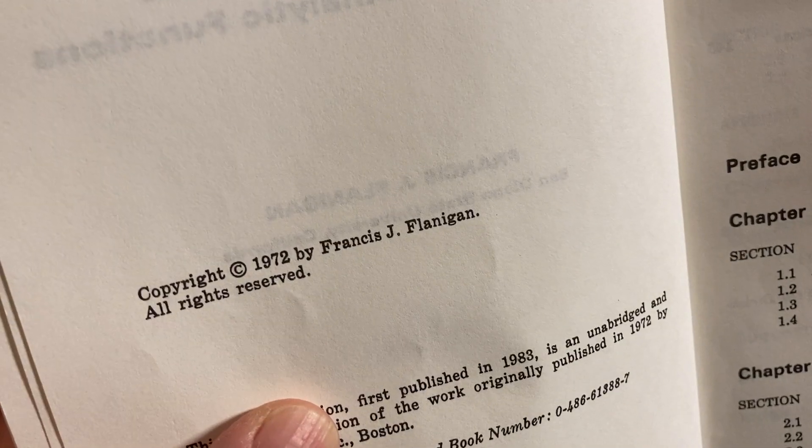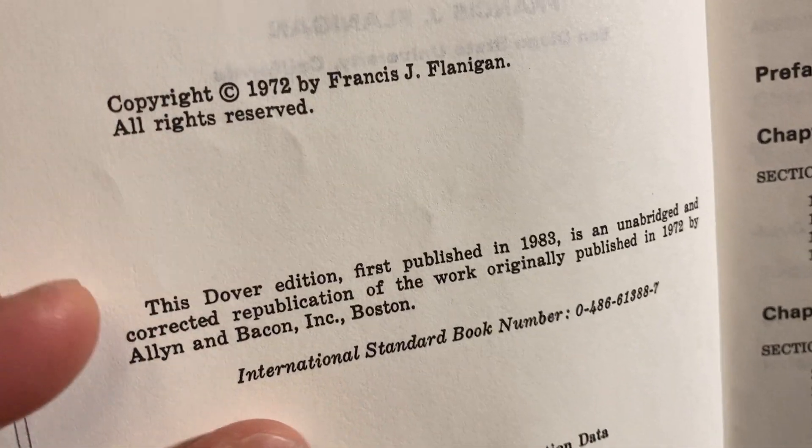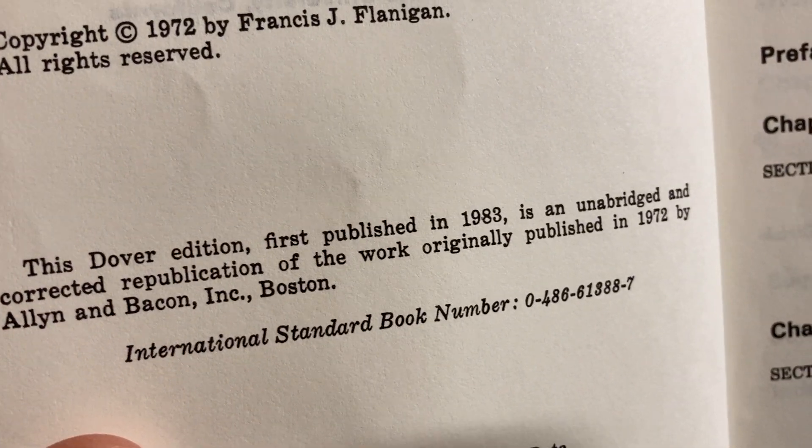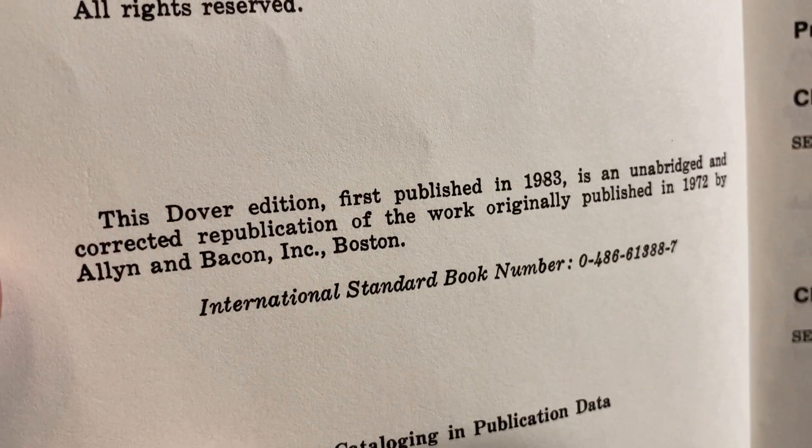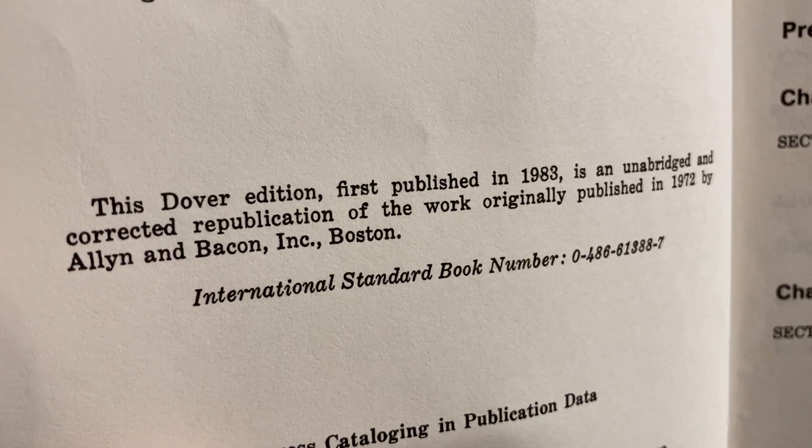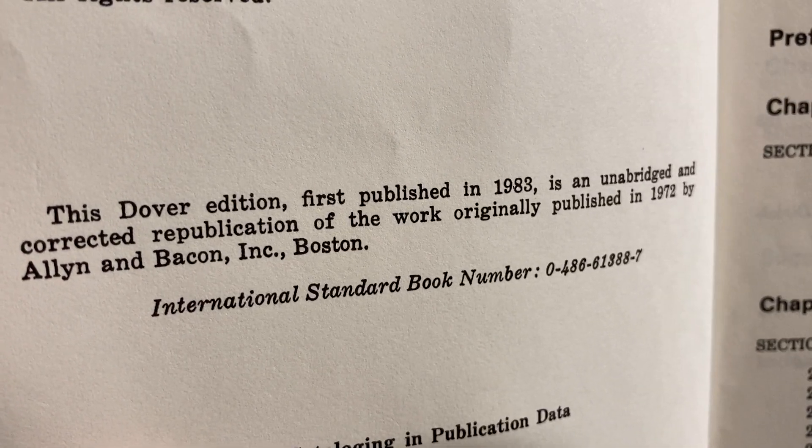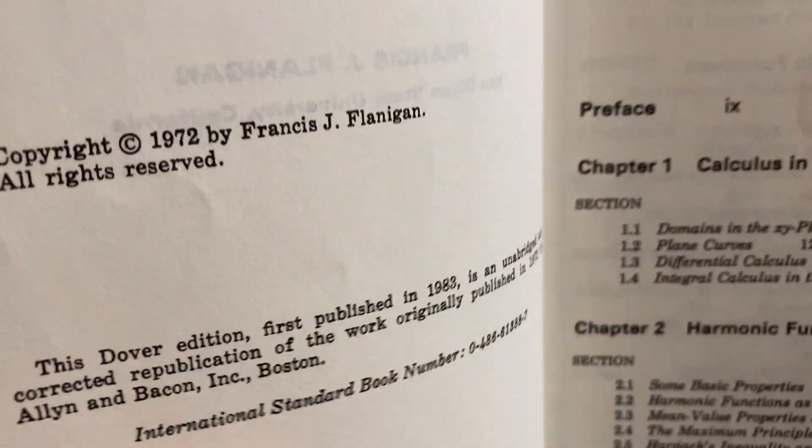Let's see if we can find the date on this. Here's the copyright, 1972. Wow, that was a long time ago. Then this Dover edition, first published in 1983, is an unabridged and corrected republication of the work originally published in 1972 by Allen & Bacon, Inc., Boston.